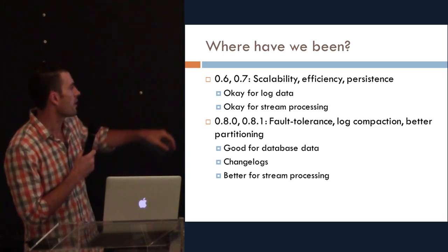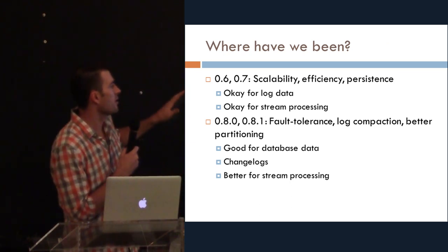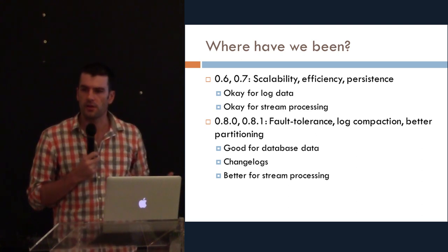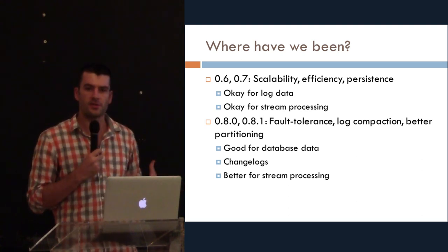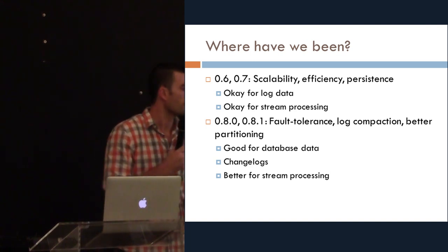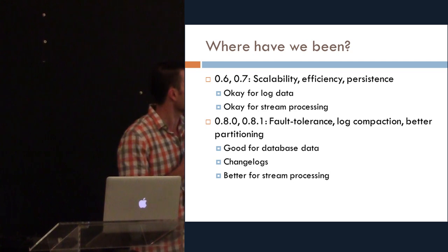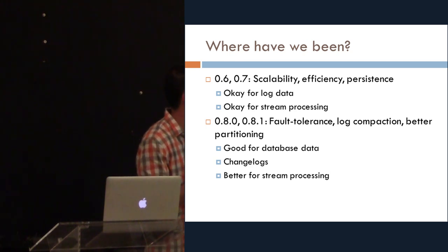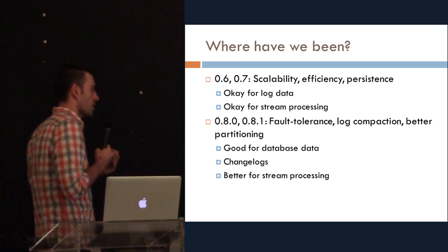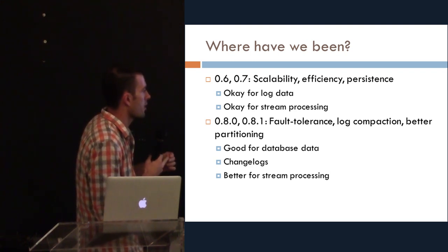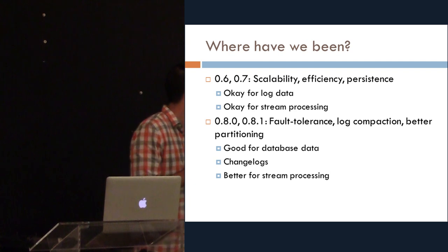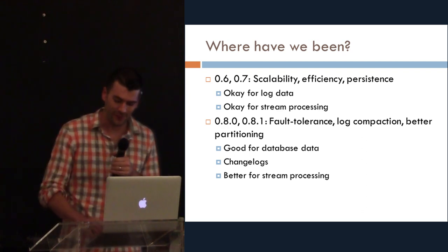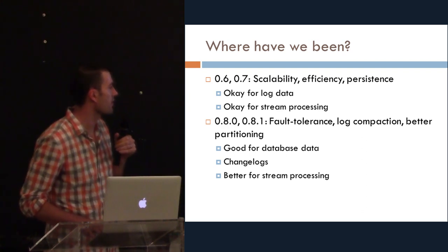Where we've been: we started very early on with pretty good scalability, efficiency, and persistence, but no real hard fault tolerance guarantees. Maybe about a year, year and a half ago, we redid everything to give very strong consistency and durability guarantees for each write. In the second release we added fault tolerance, a feature called log compaction, and a stronger partitioning model for semantically partitioning your data. At that point it became good for data you don't want to lose, and better for stream processing. That takes us up to the release currently out in Apache.